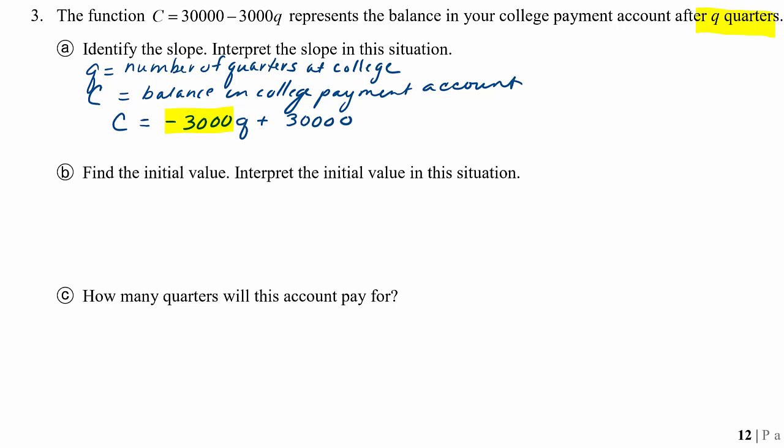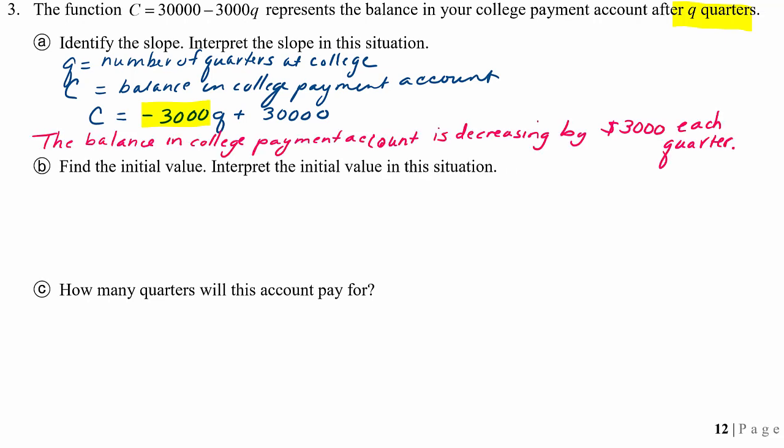So our slope says that the balance in our college payment account is decreasing by $3,000 each quarter because you're making payments on your college tuition. Let's write that down. Here's my conclusion statement. The balance in the college payment account is decreasing by $3,000 each quarter.